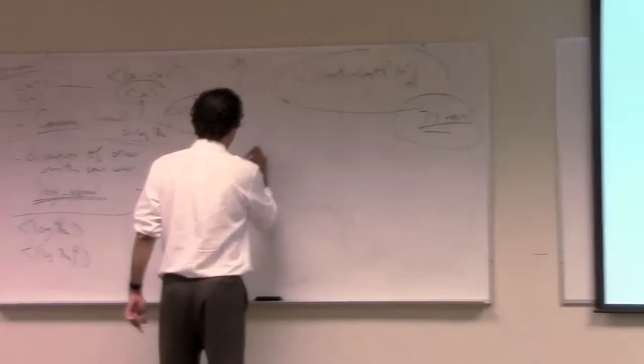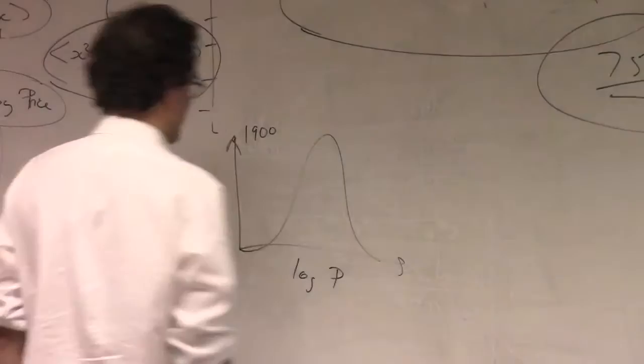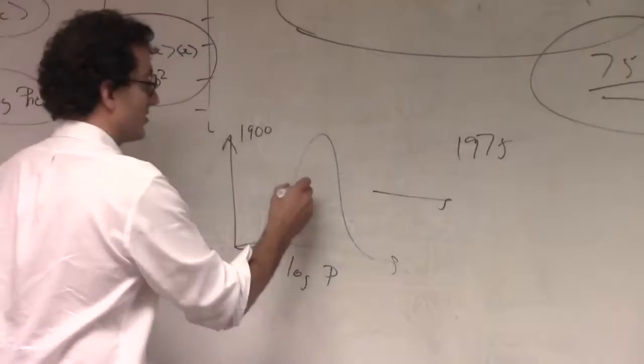That, let's say, in 1900, the log price had a certain distribution, and indeed a certain variance, sigma.